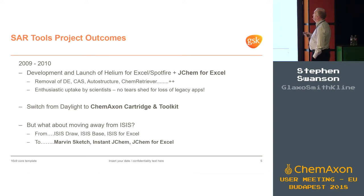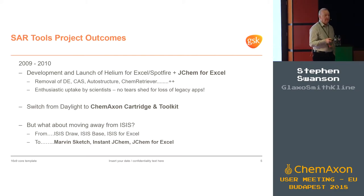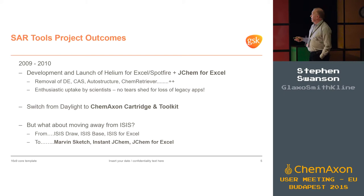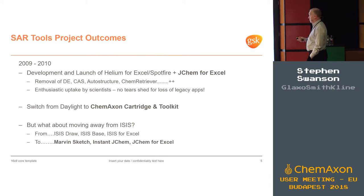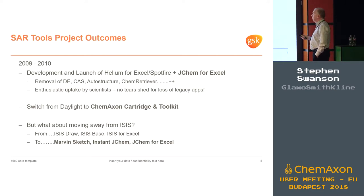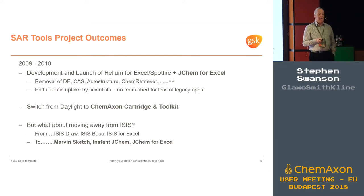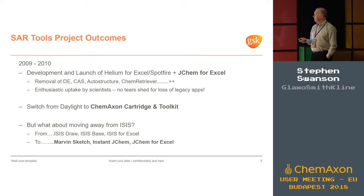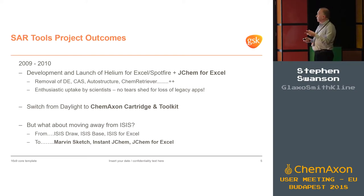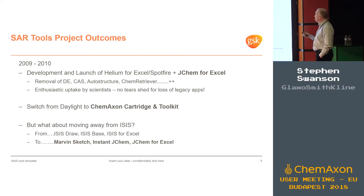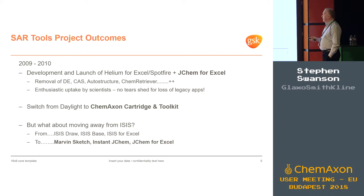In 2009 we developed this with JChem for Excel. We did get rid of all of those legacy applications. And surprisingly, because chemists are a fairly unforgiving lot, they gave a very enthusiastic response — the scientists in general. There were no tears shed for the loss of these legacy applications, and inside of six months people had forgotten about all of them. They were quite happy using Helium, and JChem for Excel worked beautifully in terms of structural rendering too.